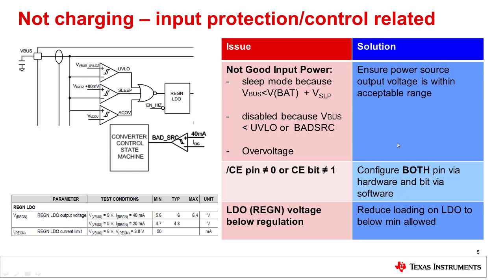The solution to these issues is to make sure that the power source is within the output voltage's acceptable range. The bad source detection will pull 40 milliamps of current for 100 milliseconds from the input to ensure that the input power is good.